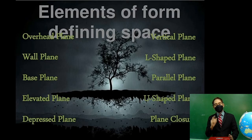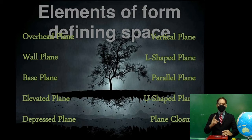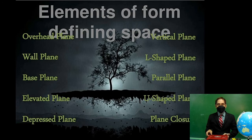The elements of form defining space include the overhead plane, wall plane, base plane, elevated plane, depressed plane, vertical plane, L-shaped plane, parallel plane, U-shaped plane, and enclosing plane.